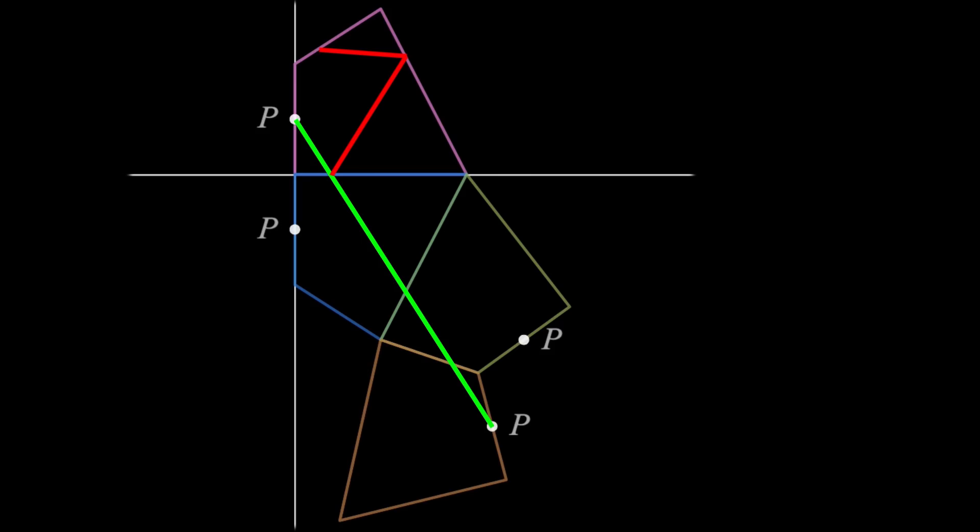And lastly, the smaller line segment in that bottom polygon can be reflected back three times about those same sides as we did with the polygons, and this gives us our answer. Remember, what you see in red is the shortest path from P to itself touching all four sides.